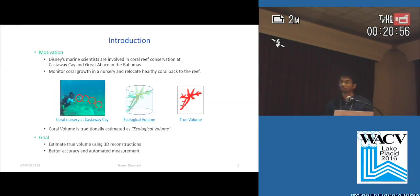Traditionally, the way they measure this growth is by using something called the ecological volume, which is an elliptical cylinder that encloses the coral. You can see that it's not a really good indicator of the true volume and it's also very cumbersome to compute.